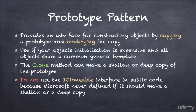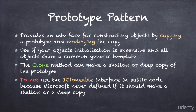The prototype pattern provides an interface for constructing objects by copying a prototype and modifying the copy. Use this pattern if your object initialization is expensive and all objects share a common generic template. We also learned that you should not use the ICloneable interface in public code, because Microsoft never actually defined if it should make a shallow or a deep copy.